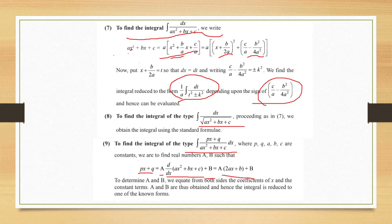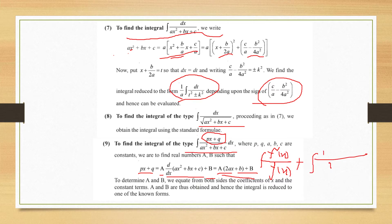For linear upon quadratic, write the linear numerator as A·(d/dx of denominator) + B. This gives 2Ax + terms matching the numerator. Compare coefficients to find A and B. This splits the integral into two parts: one of the form f′(x)/f(x) — which integrates to log|f(x)| — and another of the form 1 upon quadratic.